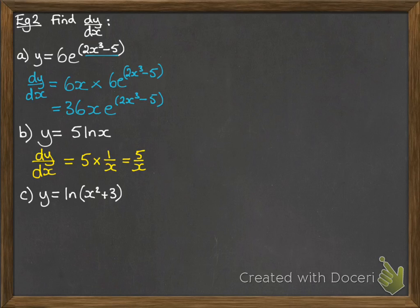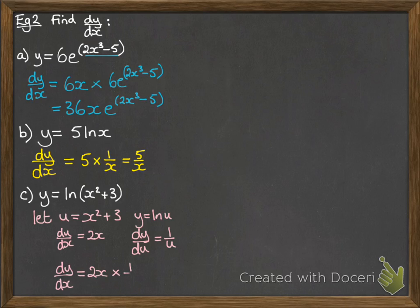Another one, y equals log of x squared plus 3. We need to use the chain rule on this one. So, let u be x squared plus 3, then y equals log u. Du/dx is 2x, and dy/du is 1 over u. So, dy/dx is 2x times 1 over u, which is 2x over x squared plus 3.